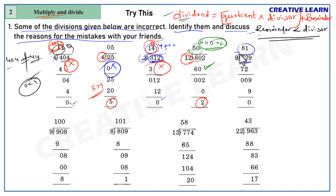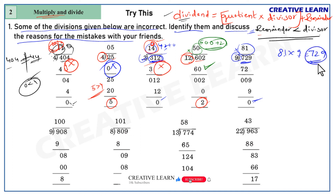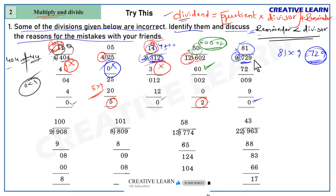Next, 729 divided by 9: quotient 81, remainder 0. Remainder 0 < 9, second rule satisfied. First rule: 81 × 9 = 729, plus remainder 0 = 729. This equals the dividend, so this division is correct.